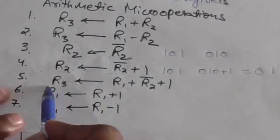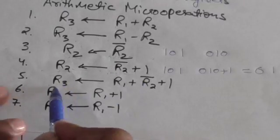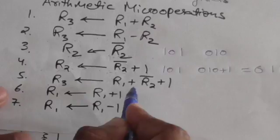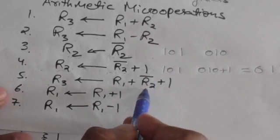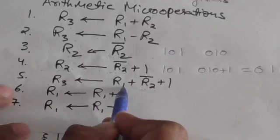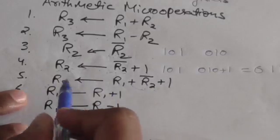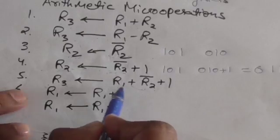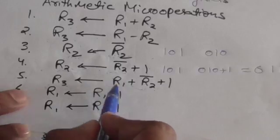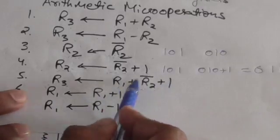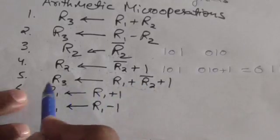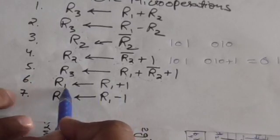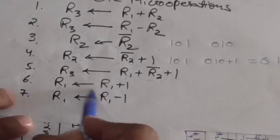This next statement represents a micro operation in which the content of register R1 and the two's complement of register R2 are added, and the result is transferred to register R3. This is effectively subtraction using the two's complement method. Now, the next statement represents an increment micro operation.